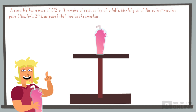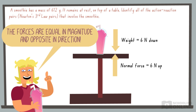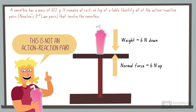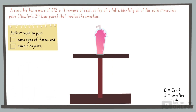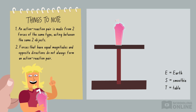Gravity pulls with a force of 6 newtons down, and the table pushes with a normal force of 6 newtons up. They are equal in magnitude and opposite in direction. Now listen closely, because the next part is important: this is NOT an action-reaction pair. As we mentioned earlier, the forces in an action-reaction pair must be the same type and involve the same two objects. The weight force occurs when the Earth interacts with the smoothie, but the normal force occurs when the table interacts with the smoothie. This cannot be an action-reaction pair because the forces are different and because they involve three objects. This goes to show that if two forces are equal and opposite, they do not necessarily form an action-reaction pair.